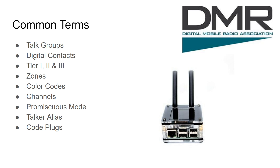Code plugs are basically all the programmed information in your radio — just like when you use Chirp to program a Yaesu FT60 or Baofeng UV-5R. You have all your channels, radio-specific frequency and bandwidth info, startup screen settings, power settings — all of that is your code plug. I recommend building your code plug from scratch rather than using someone else's, because you need to make sure it has your DMR ID and not someone else's. The code plug is not the firmware — it's the configuration the radio software uses to operate.